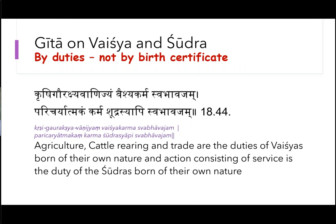For Vaishya and Shudra, it is not attributes but actions. Krishi, go rakshanam, vanijyam — Vaishya karma: agriculture, taking care of cattle, and trade. Today, anything engaged in wealth creation and growing prosperity is Vaishya. For Shudra: Paricharyatmakam karma — taking instructions and doing work very well, providing work as per instructions. These two are defined by duties, while the other two are defined by attributes.